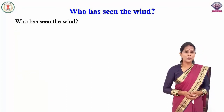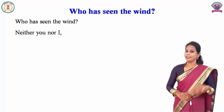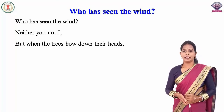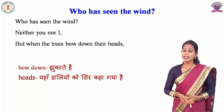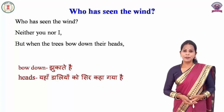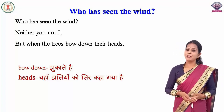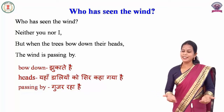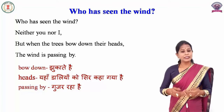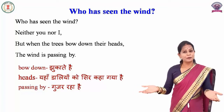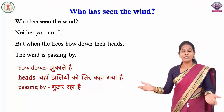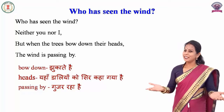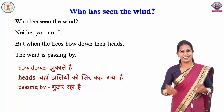'Who has seen the wind?' — हवा को किसने देखा है? 'Neither you nor I' — न तुमने और न मैंने. 'But when the trees bow down their heads' — bow down means झुकाते हैं, head means यहाँ पर डालियों को सिर कहा गया है. तो जब पेड़ अपनी डालियों को झुकाते हैं, 'the wind is passing by' — passing by means गुजर रहा है. तब हवा गुजर रही है. बच्चों, हवा बह रही है हमें कैसे पता चलता है — जब हम उसे महसूस करते हैं, जब पेड़ों की डालियां हिलती हैं, टहनियां झुकने लगती हैं, तब हमें पता चलता है कि हवा चल रही है.